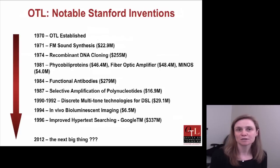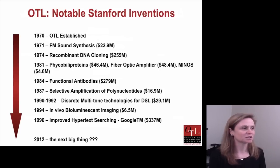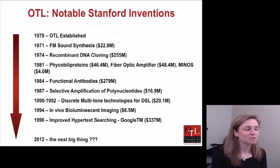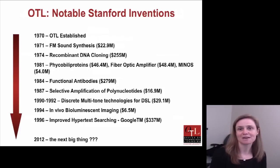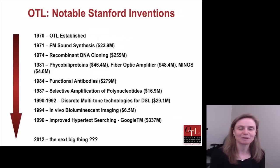There's a large gap between our last big notable invention — the PageRank algorithm from 1996 — and now, because most university technologies are very nascent and early stage. It takes a long time for technologies to catch up to where industry is at. We're hoping to figure out what the next big thing is, and maybe some of you can help us with that.